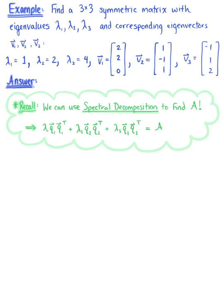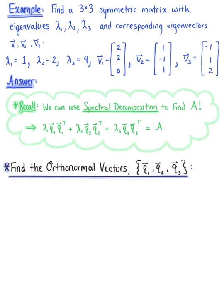The very first thing we need to do is find the orthonormal vectors q sub 1, q sub 2, and q sub 3. In order to find these vectors, we need to normalize the given eigenvectors. So our first vector, q sub 1, is defined by normalizing the eigenvector v sub 1.